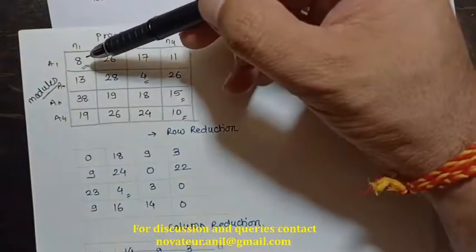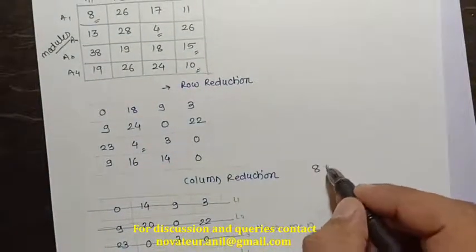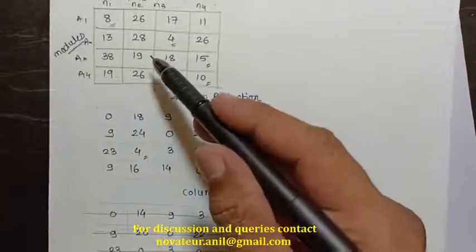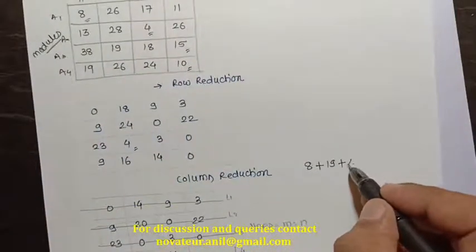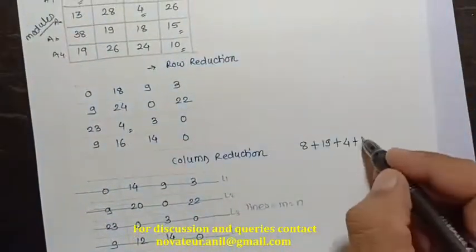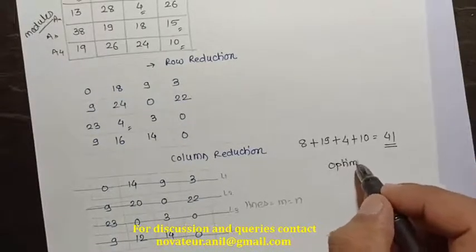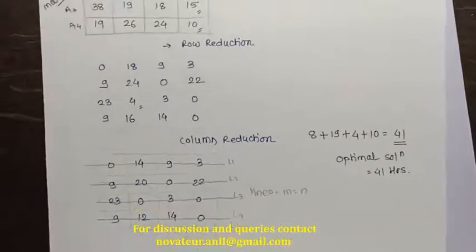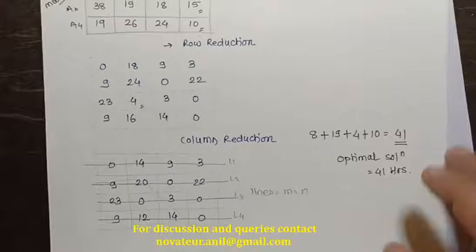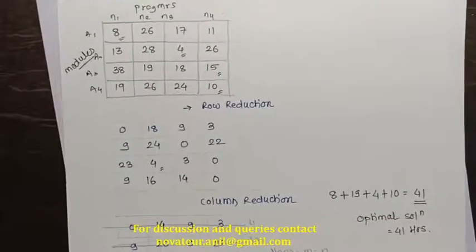We now check these assigned positions in the original problem. The original values at the assigned positions are 8, 19, and 10 (and one more). Summing these gives 8 + 19 + 10 = 41 hours. So the optimal solution is 41 hours — the minimum time needed to complete the given assignment problem. For unbalanced assignment problems, please see the next video lecture. Thank you.